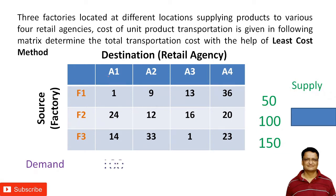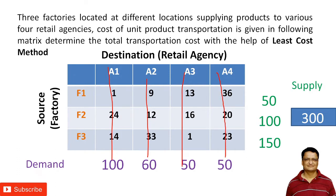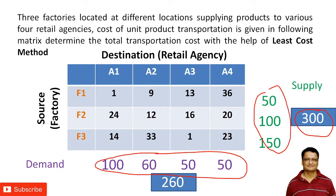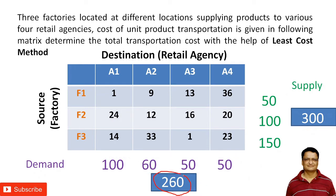A1 has a demand of 100, A2 has a demand of 60, A3 has a demand of 50, and A4 has a demand of 50. The total supply is 300, whereas the total demand is only 260. So we have 40 surplus goods, which is why this is an unbalanced problem — the figures 260 and 300 do not match.